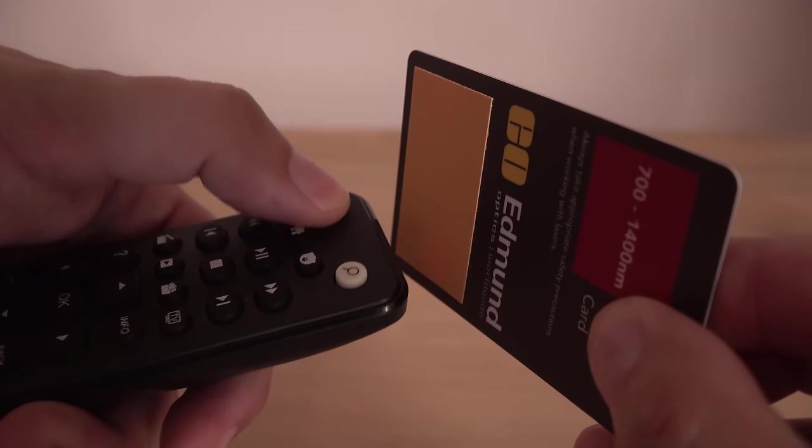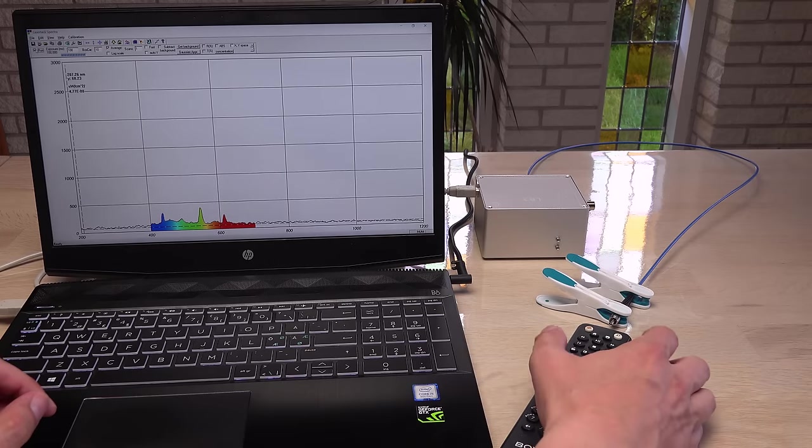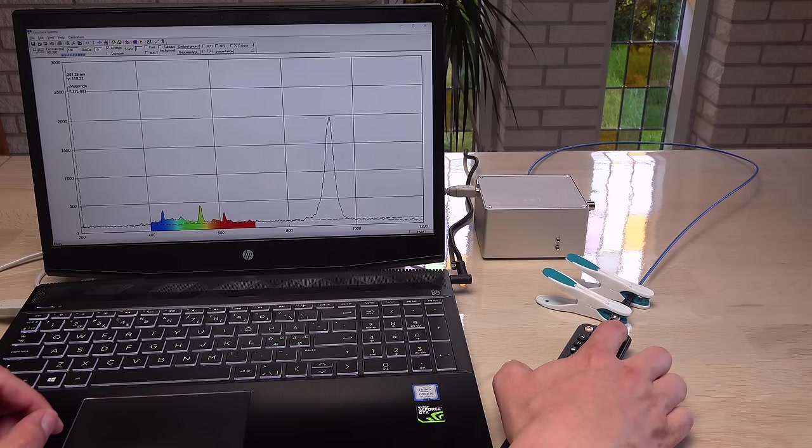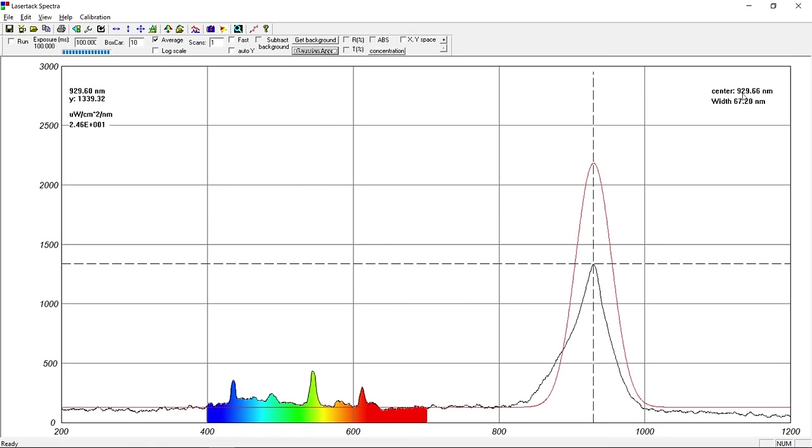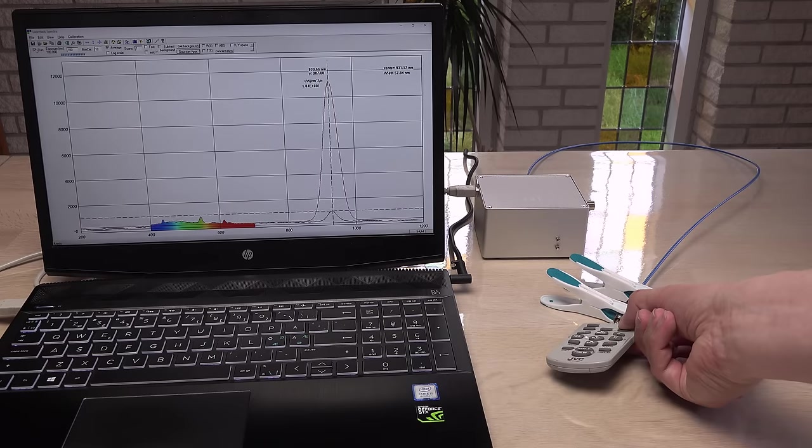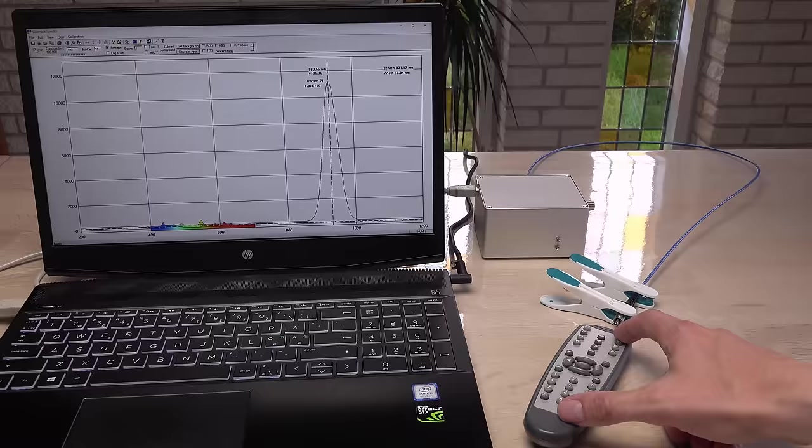Actually with the spectrometer setup why don't we test the wavelength of remote control light? It is centered around 930 nm. As were all remotes I tested. Interesting.